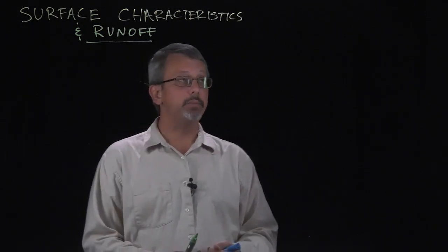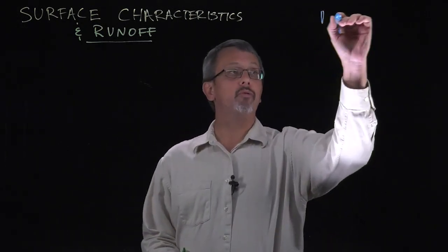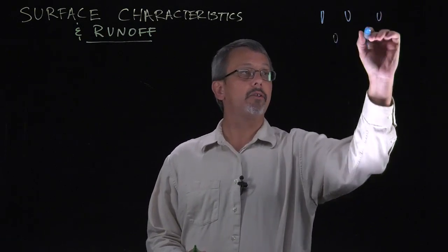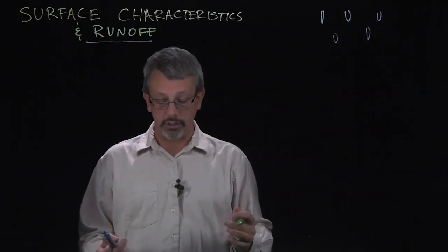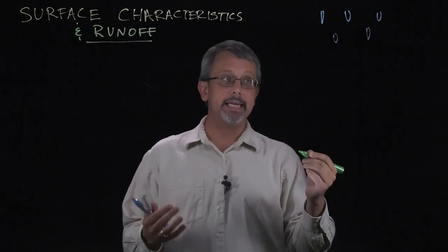So let's talk a little bit about surface characteristics and how they affect runoff. When water falls out of the sky as precipitation, and we'll think mostly in terms of rain, falling out of the sky, encounters a solid surface, a number of possible things can happen.